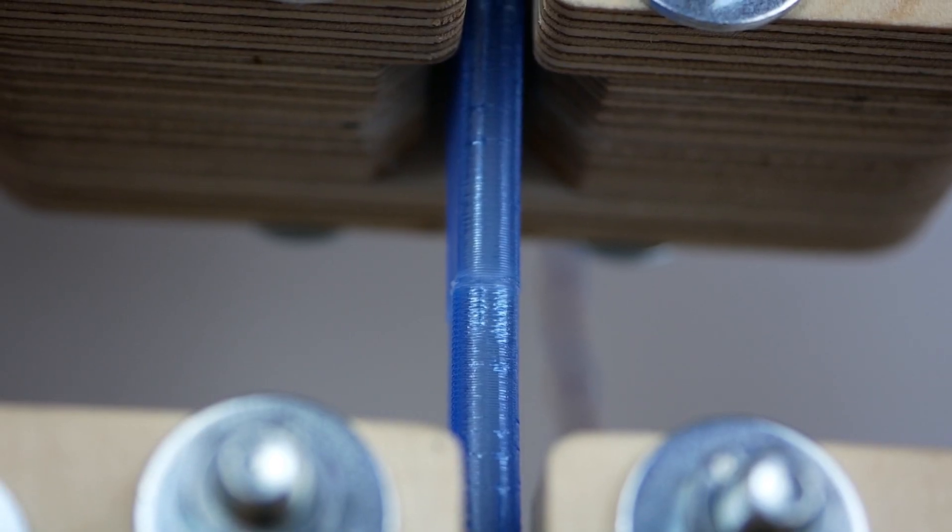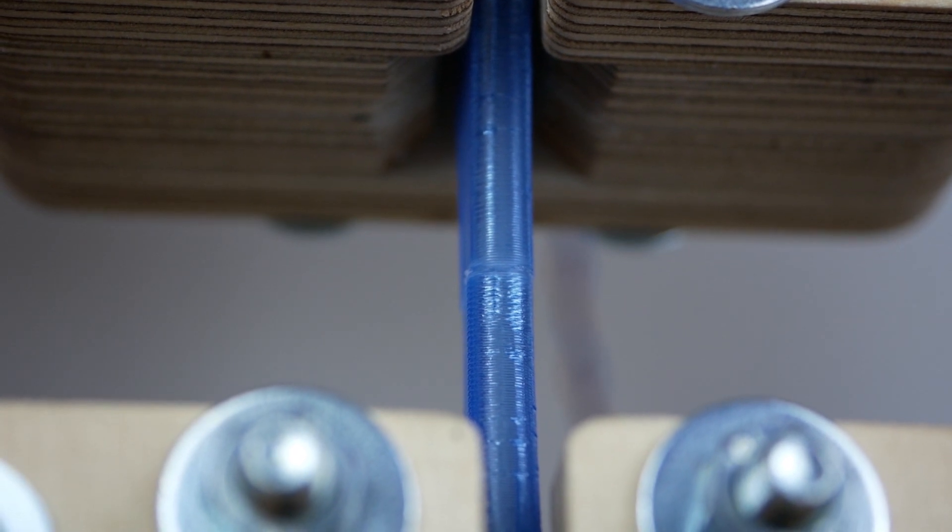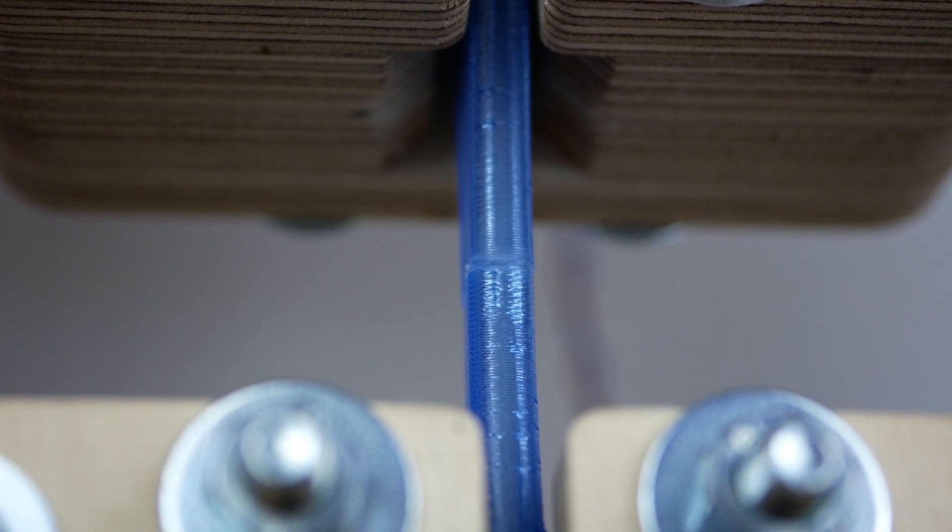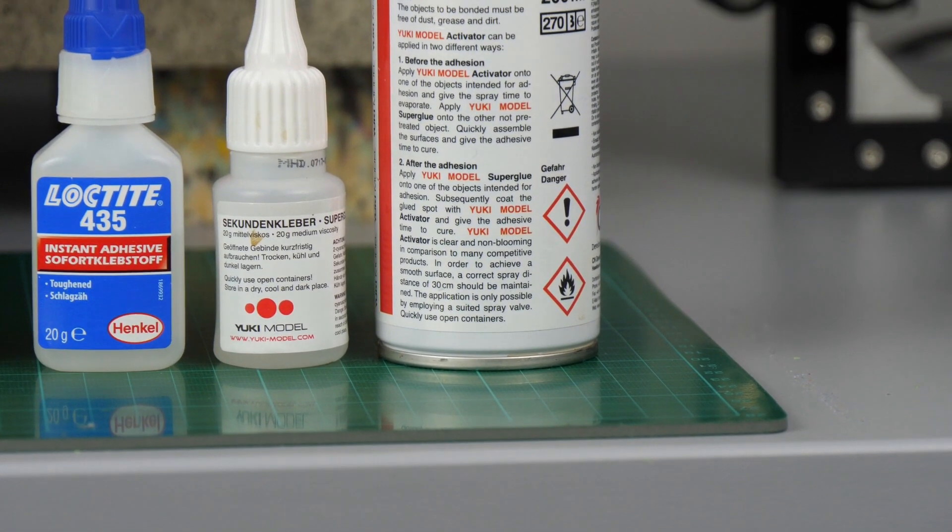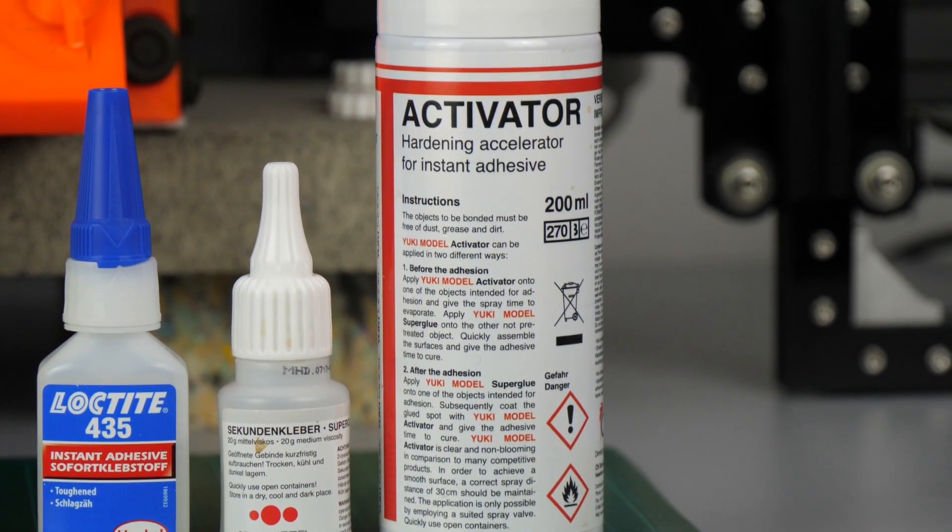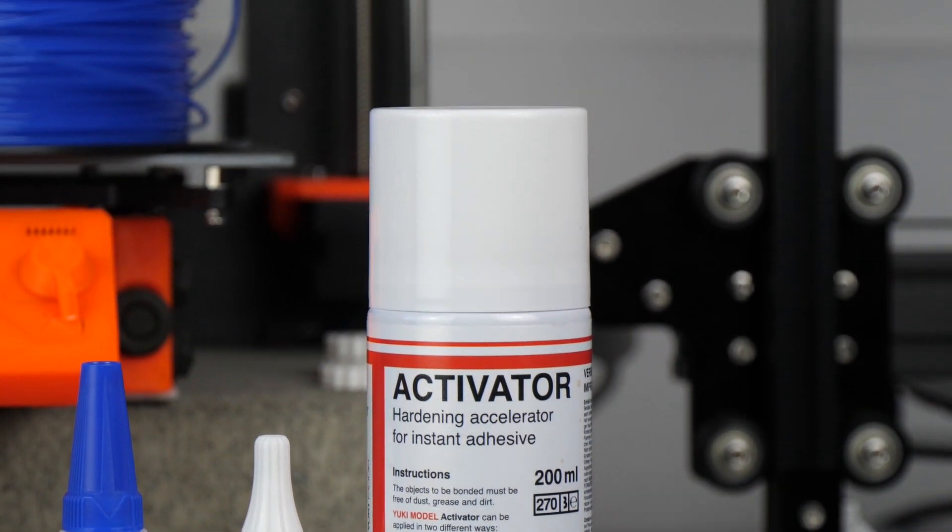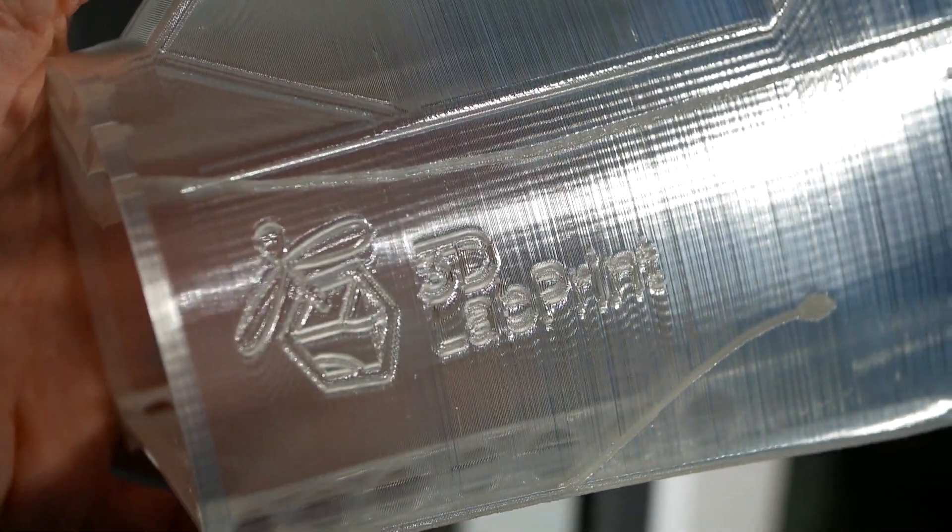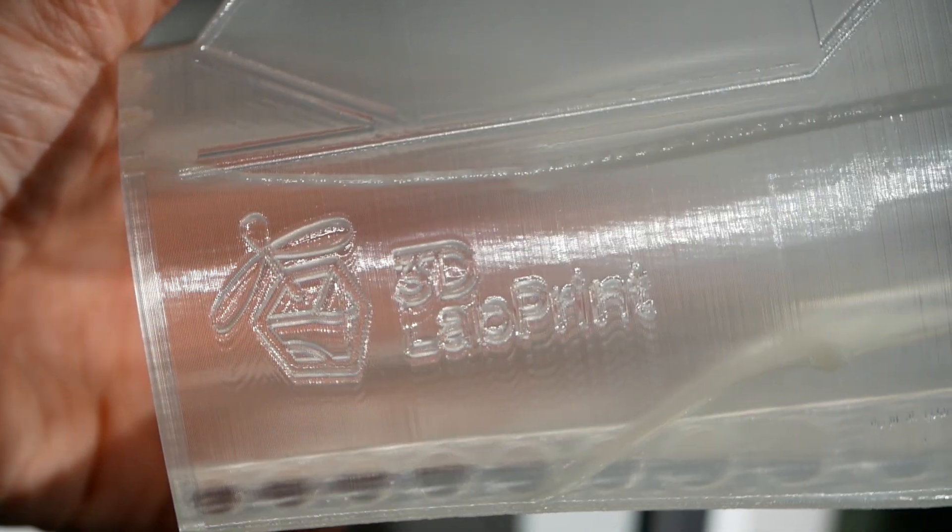Even though epoxy showed the highest strength values if we don't consider the outlier it's probably not the best solution for our 3D printed plane because it takes too long to set. Decent CA glue with the right kicker is as suggested the best solution and the strength results weren't largely different between the brand name and the generic adhesive. For these reasons I will be using standard CA glue with accelerator for the 3D printed plane project.